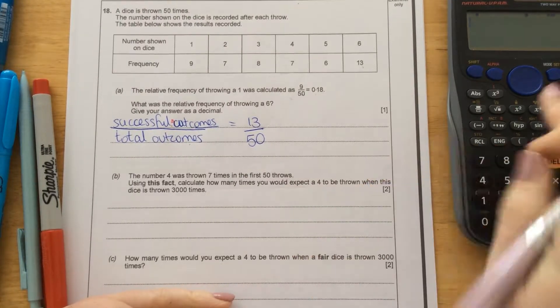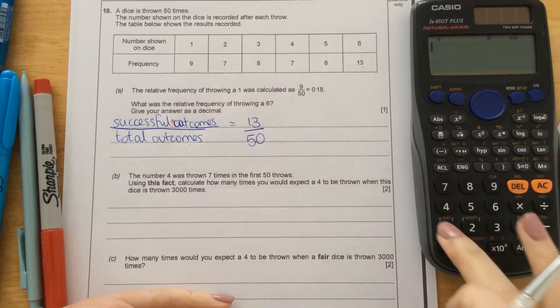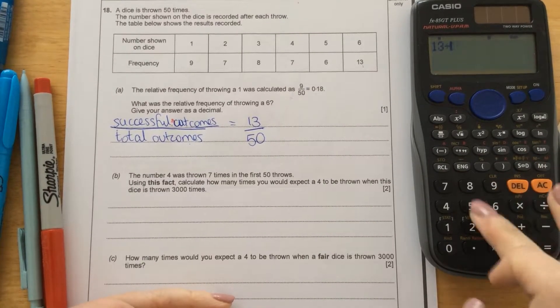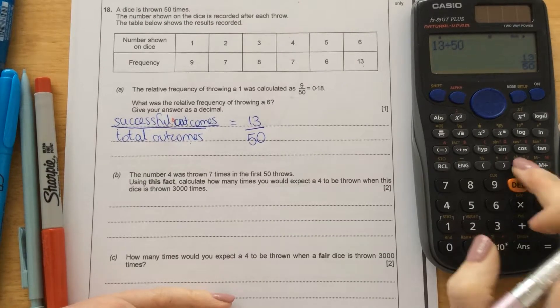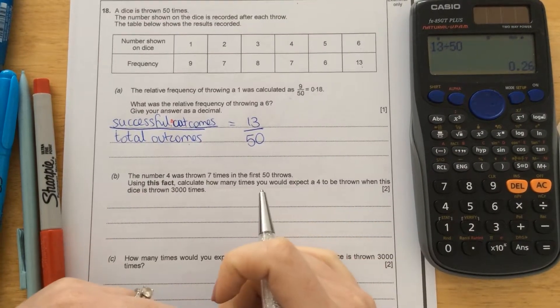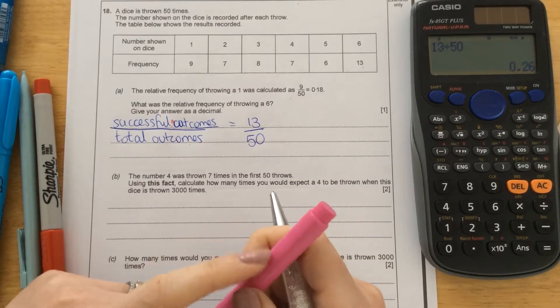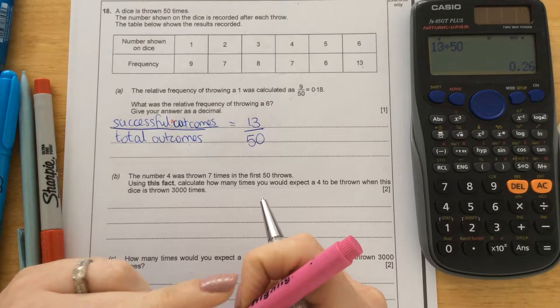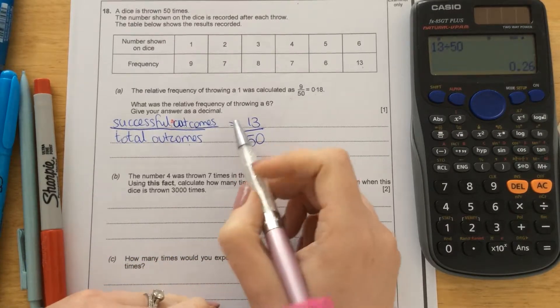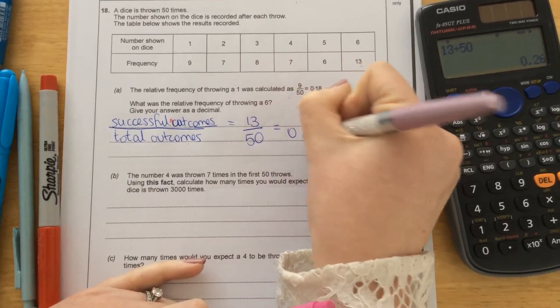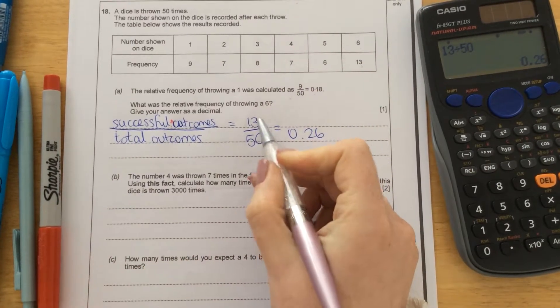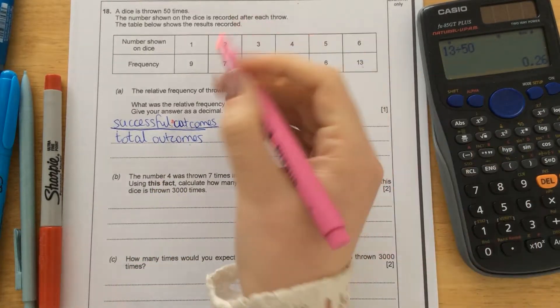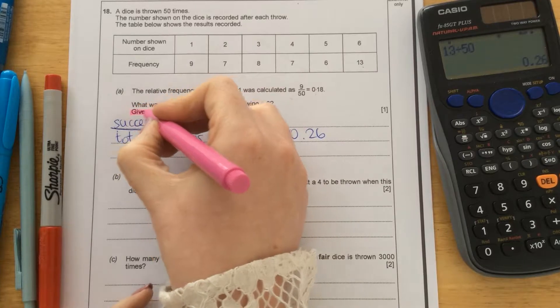To turn that into a decimal, use your calculator, and we'll type 13 divided by 50 equals 0.26. And that would give you one mark. You won't get any marks at all if you've written 13 over 50, because the question stated specifically to give your answer as a decimal.